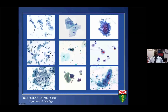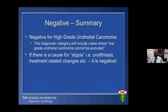In summary, for 'negative for high-grade urothelial carcinoma,' we can only exclude high-grade urothelial carcinoma—you cannot rule out entities such as low-grade urothelial carcinoma. If there's a cause for atypia—the presence of stones or treatment-related changes—we tend to call that negative. For clinicians, when you know that patients have a history of kidney stones, or have been treated with BCG or radiation therapy in the past, even though the cells look atypical, because of that history it's most likely going to be a negative call.